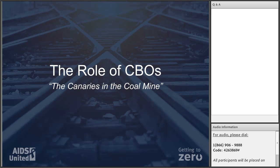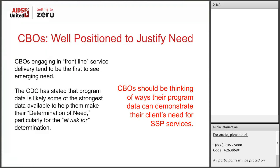Given that health departments are the only entities that can initiate the determination of need application, and that agencies like the CDC fund health departments as primary grantees, what is the role of CBOs? In my mind, CBOs are the canaries in the coal mine. Even if you're not currently providing SSP services, if you're serving injection drug users, people who use drugs, low-income people, or homeless folks, you're likely seeing the impact of the opioid epidemic more quickly than people at your health department. The CDC has said that CBOs are well-positioned to justify the need and that your program data is possibly the strongest data to demonstrate why SSP services should be federally fundable.